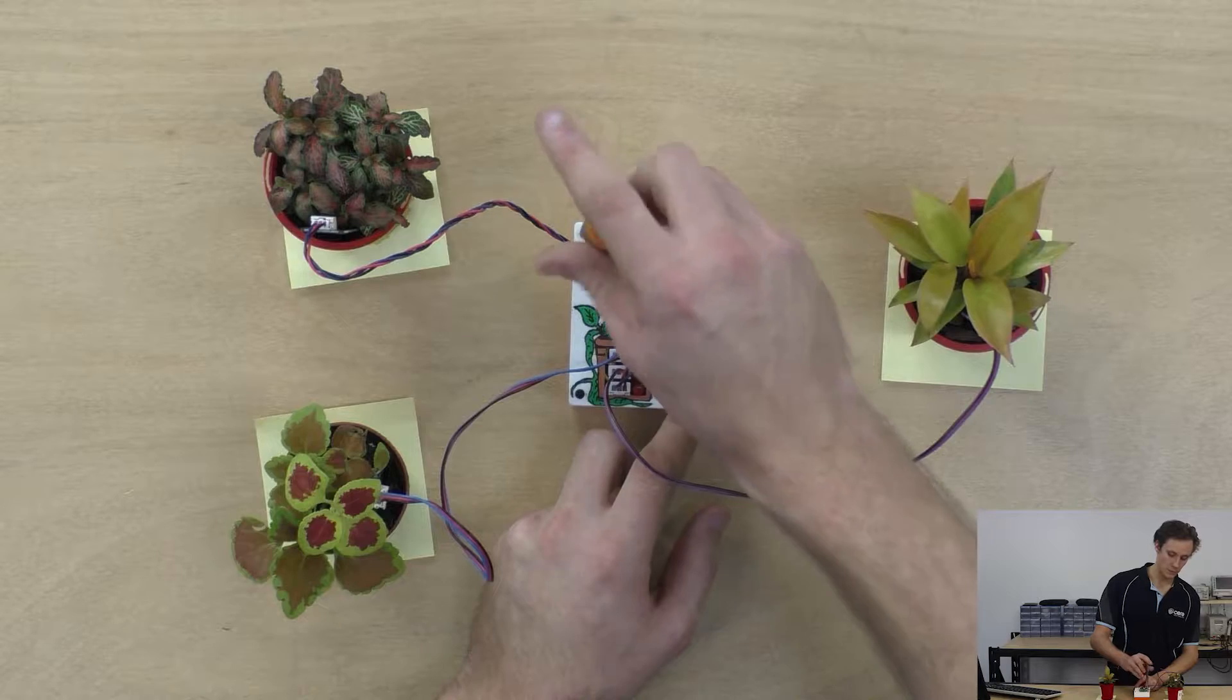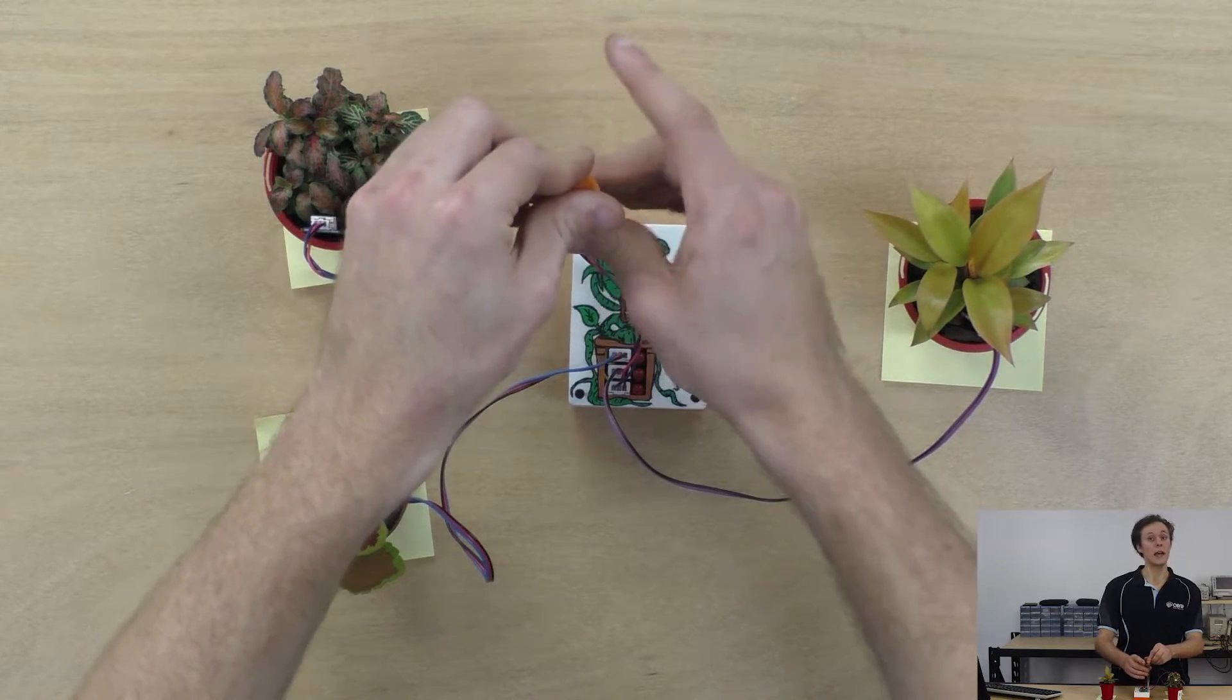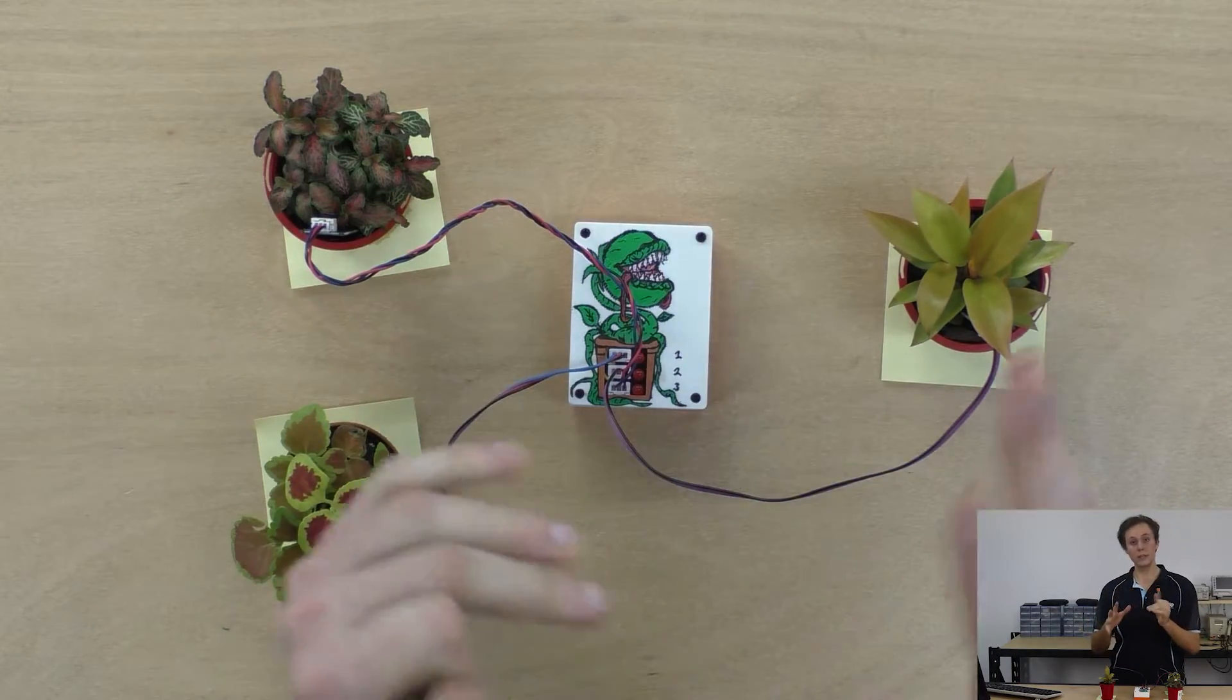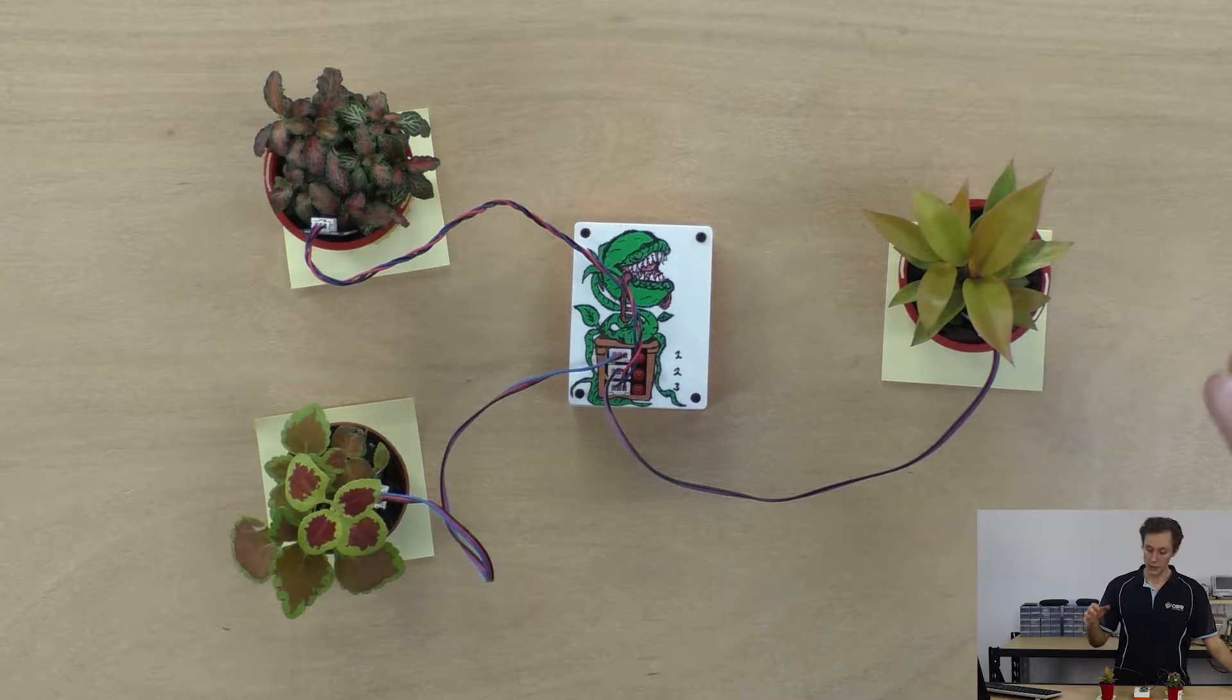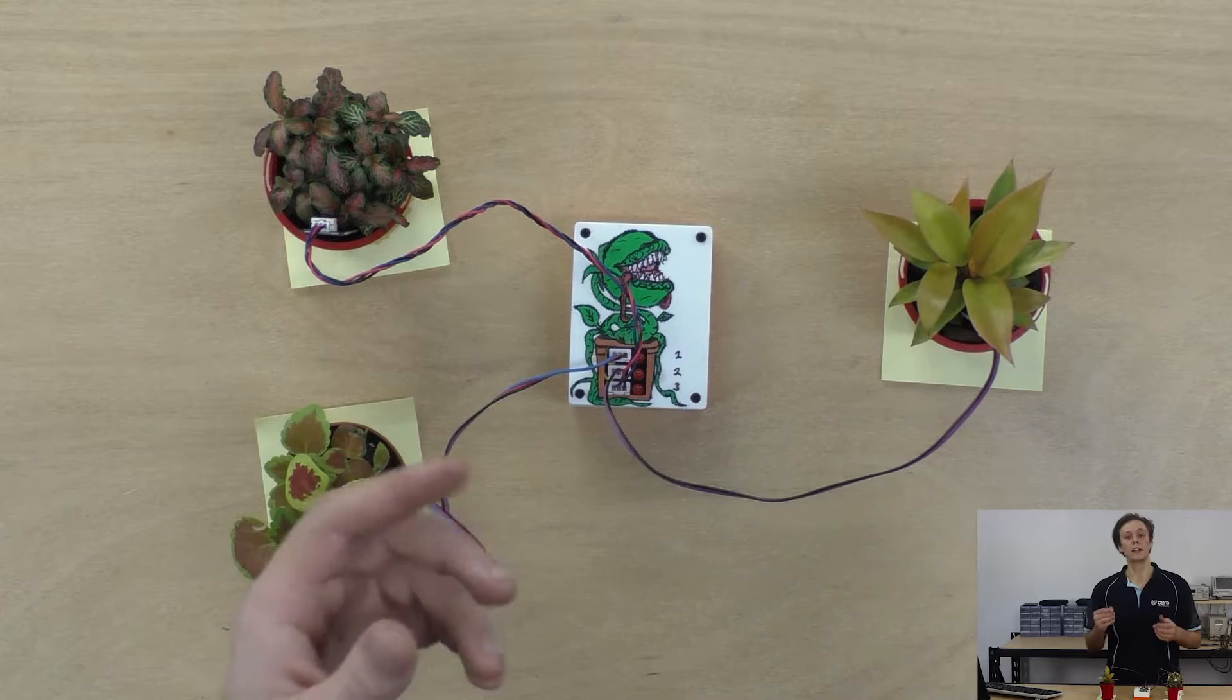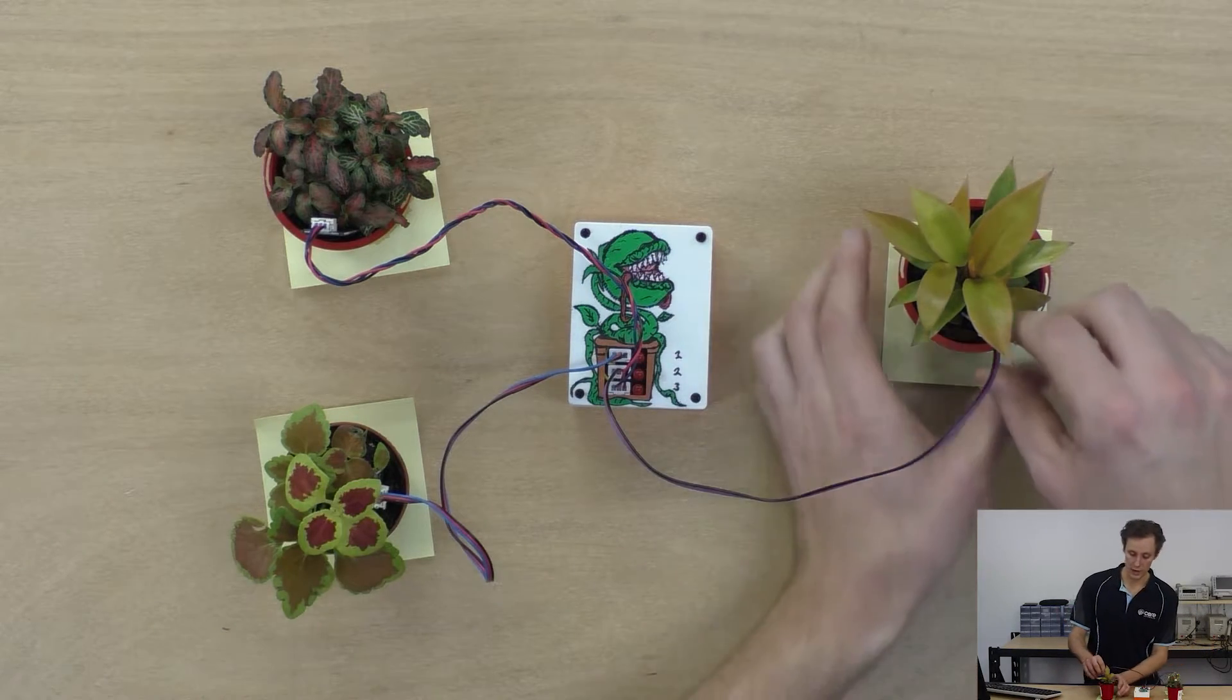So you can see that nothing is happening on the photon and what it does is it will wake up check the sensors and if they're all good if there's plenty of water in the soil then it will just go back to sleep but if one of them is dry then it will light up the corresponding LED and as I said shoot you an email.